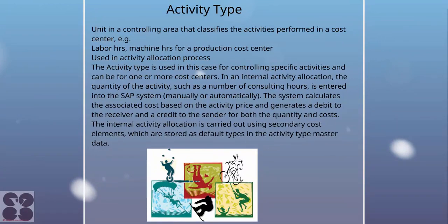An activity type is a unit in a controlling area that classifies activities performed in a cost center — for example, labor hours or machine hours in a production cost center — and is used in activity allocation processes. The activity type can apply to one or more cost centers. In an internal activity allocation, the quantity of the activity — such as consulting hours — is entered into SAP manually or automatically. The system calculates the associated cost based on activity price and generates a debit to the receiver and a credit to the sender for both quantity and cost. Internal activity allocation is carried out using secondary cost elements stored as default types in the activity type master.